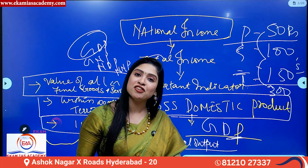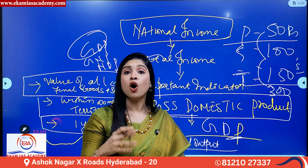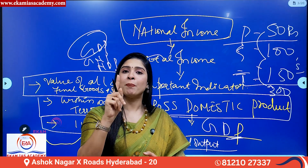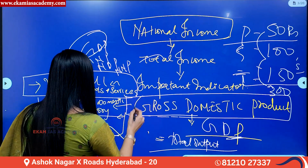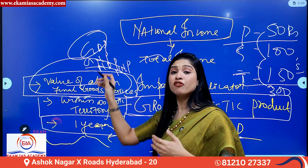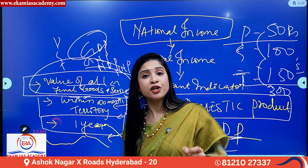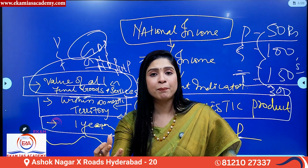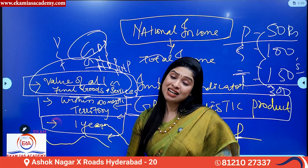GDP is defined as the total final value of all goods and services produced within the domestic territory of a country for a period of one year, irrespective of nationality. GDP takes into consideration only the value of final goods and services from all three sectors — primary, secondary, and tertiary. It must be produced within the geographical boundary — so for India's GDP, only production that happens within India will be considered.